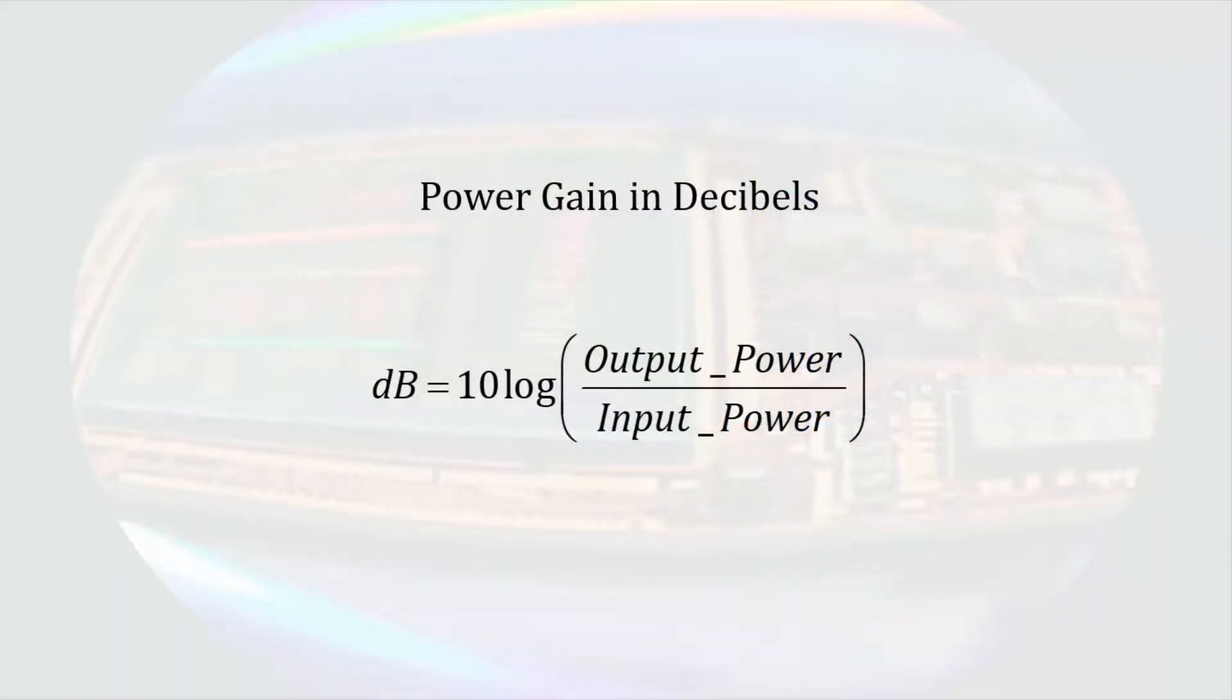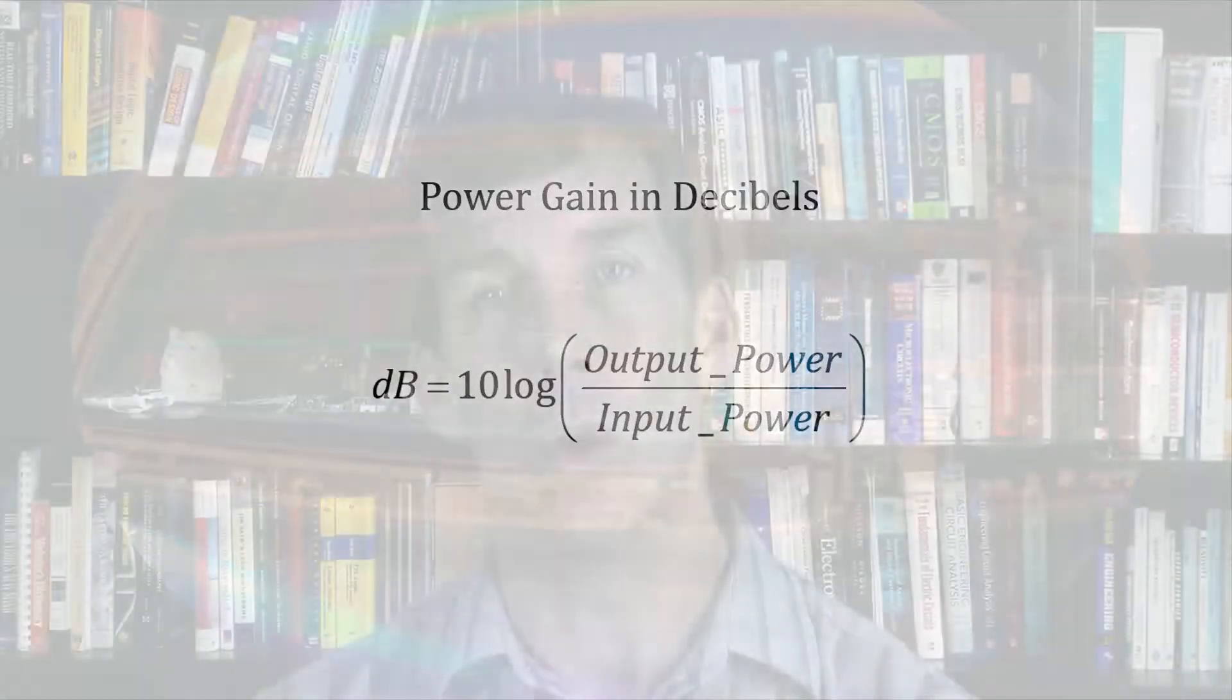We generally do not use the unit of bell anymore. It has been determined that one-tenth of a bell, or a decibel, is a more practical unit. The decibel itself refers to a ratio of quantities. It can refer to the ratio of the pressure of a sound wave relative to the background pressure. That is the context that most people have heard the term used. It can refer to the ratio of power of light transmitted through an optical cable relative to the power of the light that was sent.